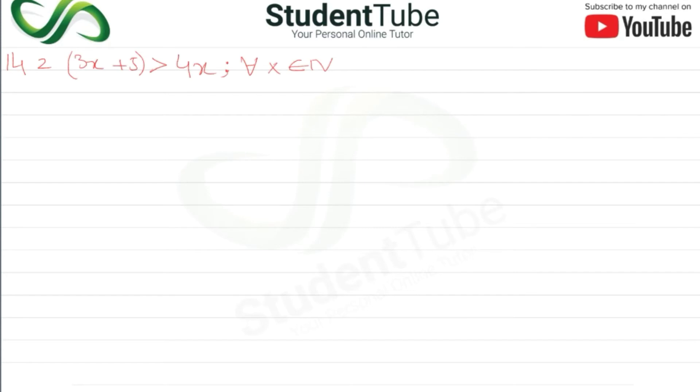Question number 14 is 2(3x + 5) > 4x. So here we have 2 times 3x plus 5 greater than 4x. Now here is 6x plus 10 greater than 4x. Now 6x minus 4x and this is going to be minus 10.